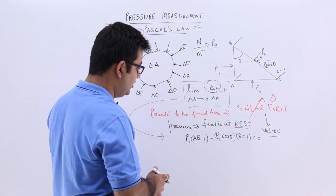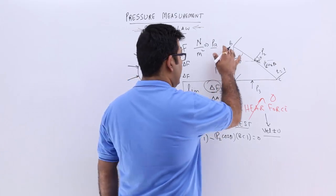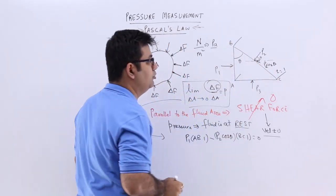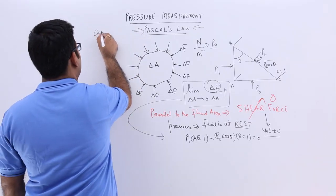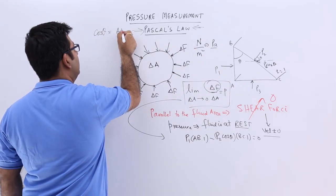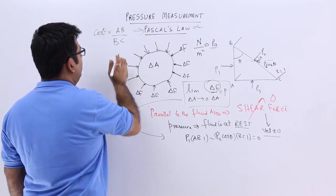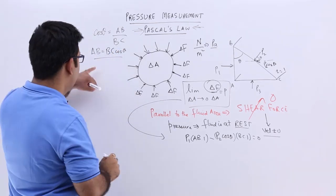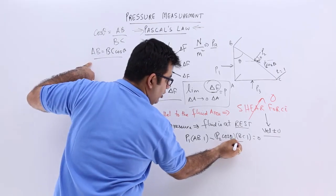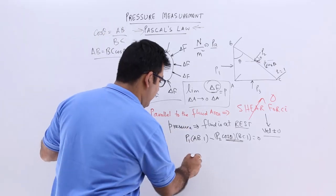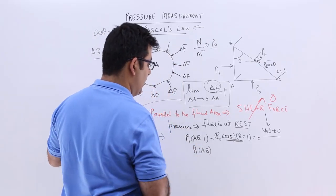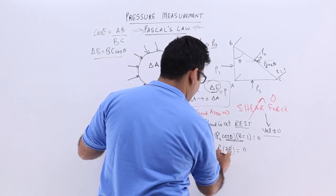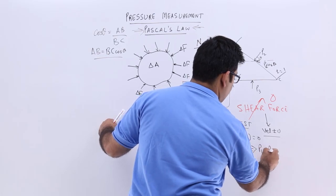Using right-angle triangle trigonometry, cos theta equals base AB upon hypotenuse BC, so AB equals BC cos theta. Substituting BC cos theta as AB: P1 times AB minus P2 times AB equals 0. Cancelling AB from both terms gives P1 equals P2.